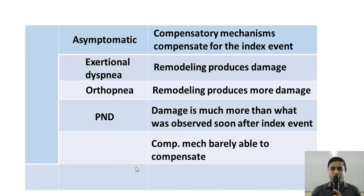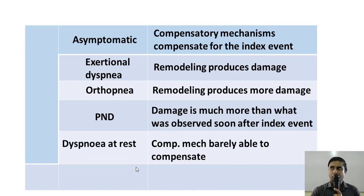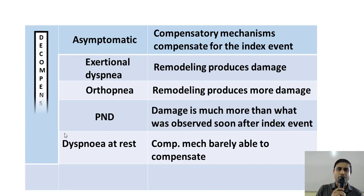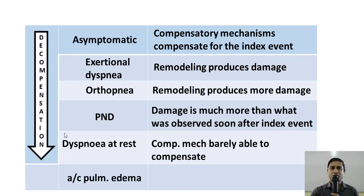It is a very dramatic situation, and the patient may be so afraid and apprehensive that they may not go back to bed again for fear of another attack of paroxysmal nocturnal dyspnea. Later on, the damage produced by the remodeling process may become so severe that the patient becomes dyspneic even at rest. The process of decompensation becomes more and more until the patient cannot compensate for the damage anymore and develops frank acute pulmonary edema — the cardinal feature of acute decompensated heart failure, nothing short of a medical emergency.